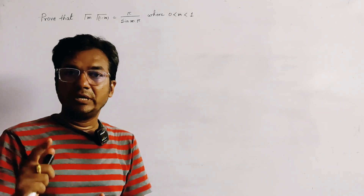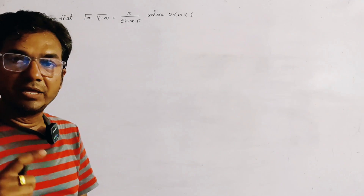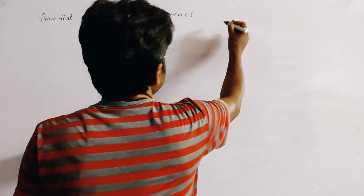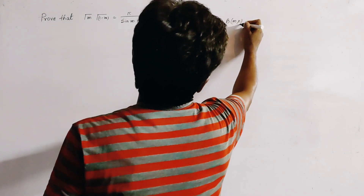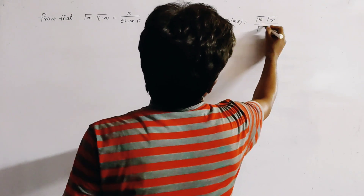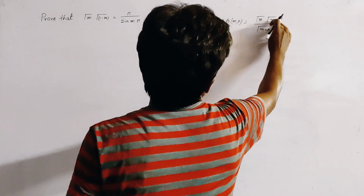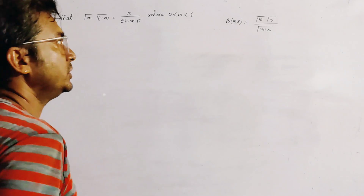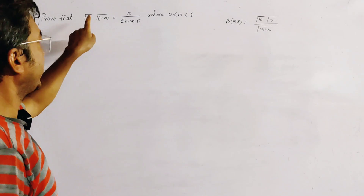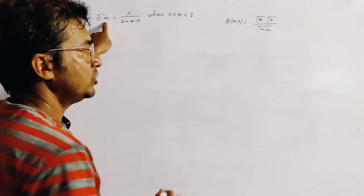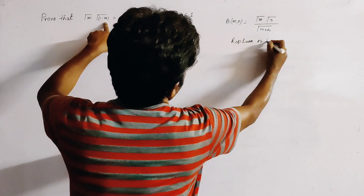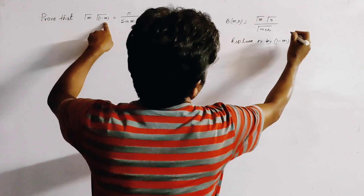We already proved in the previous class an important relation of the beta function and gamma function, which is β(m,n) = Γ(m)·Γ(n) / Γ(m+n). To obtain the relation Γ(m)·Γ(1-m), we replace n by (1-m) in that formula.